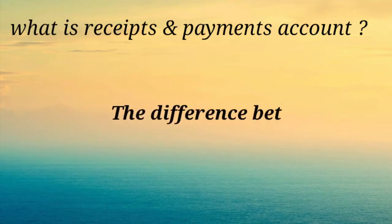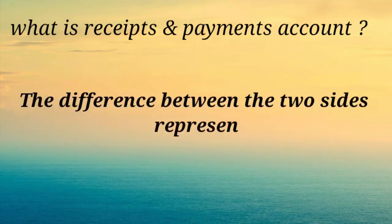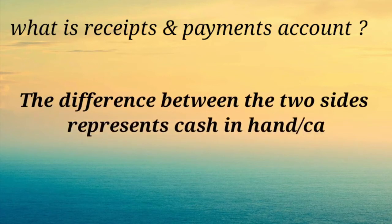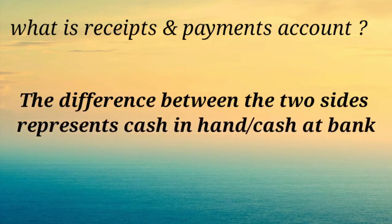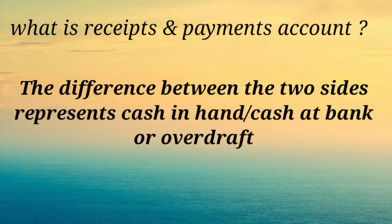The difference between the two sides represents cash in hand, cash at bank, or overdraft. A debit balance in the receipts and payments account indicates cash in hand or cash at bank, while a credit balance indicates an overdraft.